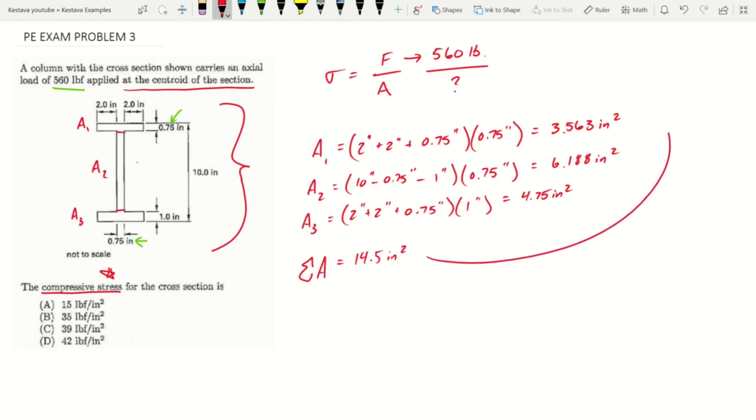Now we can plug into our stress equation. Stress equals force over area. When we look at our units, we have pounds and we have inches squared. Our answers are given in pounds over inches squared, so we know we're already in the right units. We don't need to change our units. That just reduces to 38.6 psi, or pounds over inches squared. You can round up to 39, which gets you the answer is C.